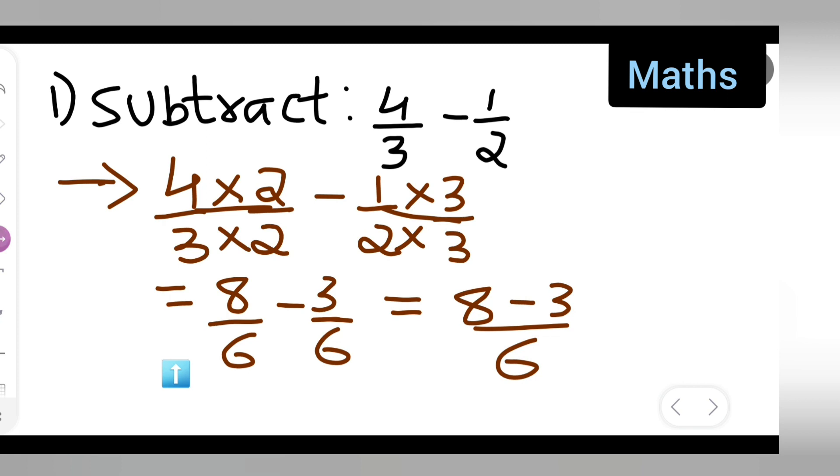Take this 6 common, then 8 minus 3 is what? 8 subtract 3, you will get 5 upon 6.